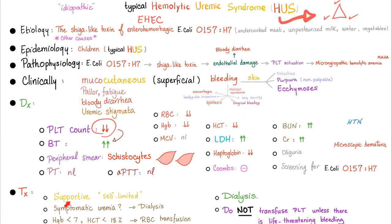Just support the patient and it will be fine on its own most of the time. For symptomatic uremia, go with dialysis. If hemoglobin is less than 7 and hematocrit is critically low, that's bad anemia — RBC transfusion is indicated. Dialysis should be ready if there is severe acute kidney injury. Do not transfuse platelets — the problem was tiny platelet clumps causing the shearing and hemolysis. Transfusing platelets would add insult to injury. Also, do not give antibiotics — it's a self-limited disease. Do not give platelets, do not give antibiotics.